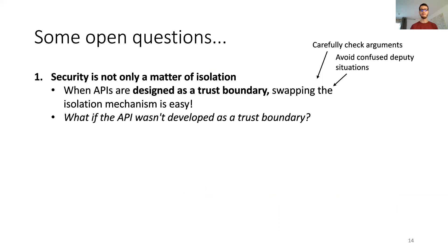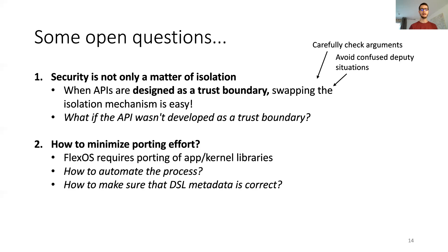This work opens a number of interesting questions. Among them, the difficulty to consider security only from the perspective of isolation. APIs that are developed from the beginning as a trust boundary, such as a system call API, carefully check arguments and make sure to avoid confused deputy situations. This level of care is not necessarily present in APIs that were not developed as a trust boundary. Another question is the porting effort — FlexOS requires a certain degree of porting. How can we automate it? And for the DSL metadata, how can we make sure it is correct?